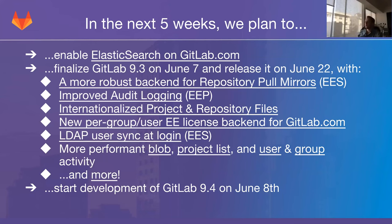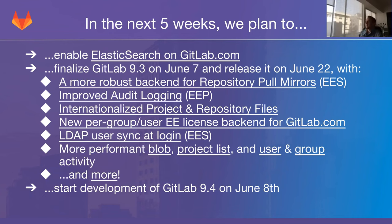Search will be much faster and smarter about finding what you're looking for — results don't need to be exact matches, since Elasticsearch interprets your query and finds the most likely result. On June 7th we plan to finalize GitLab 9.3, releasing it on June 22nd.